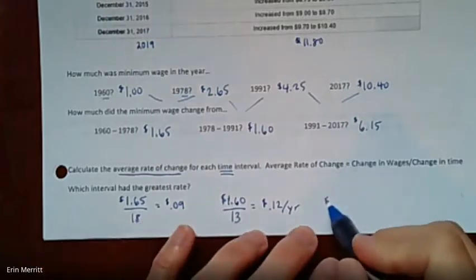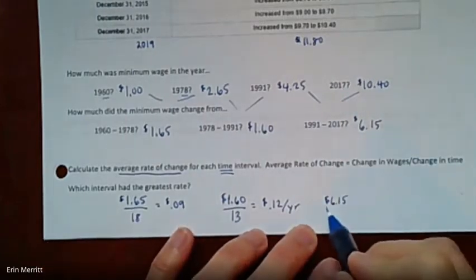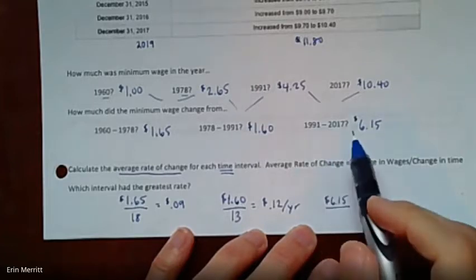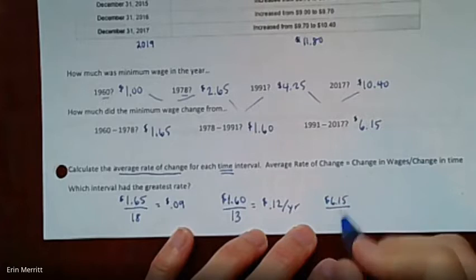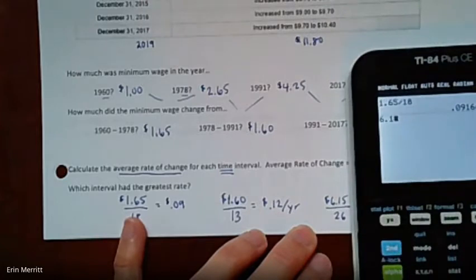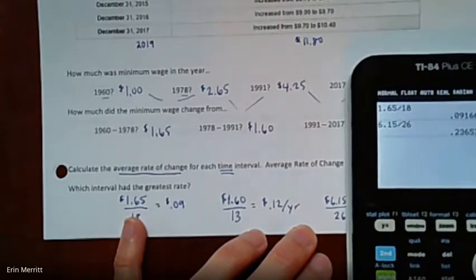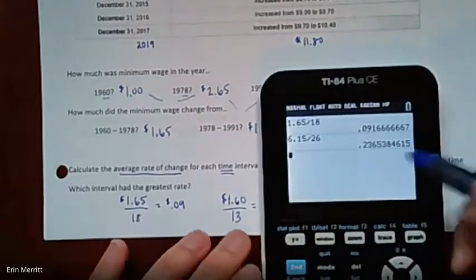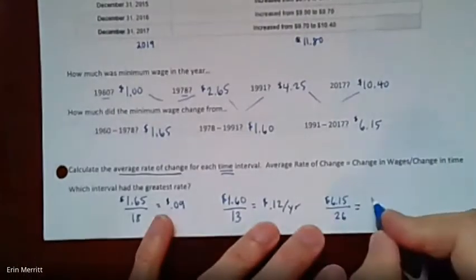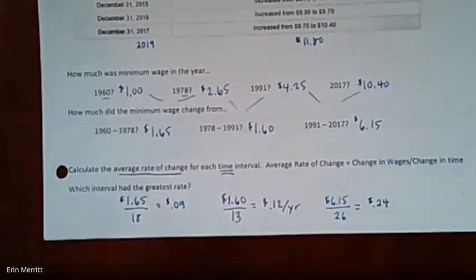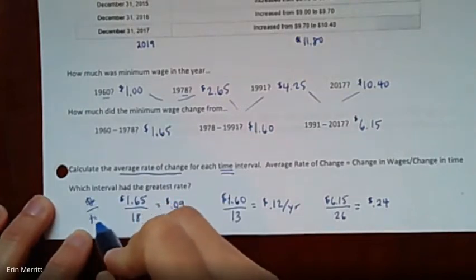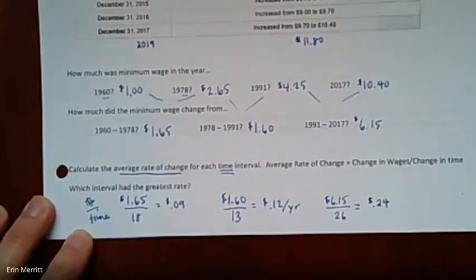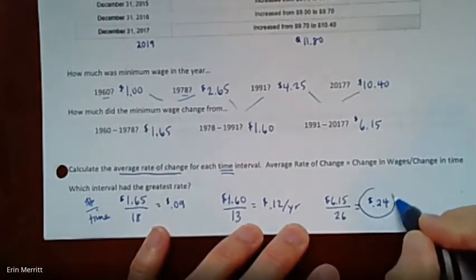All right. And then same thing for the next one. From 1978 to 1991, it went up $1.60, but from '78 to '91, that was a 13 year gap. So it didn't go up quite as much as this, but it went up faster because it was only in 13 years. So if you take $1.60 and divide, it comes out to be about 12 cents per year. So it was a little bit of a faster rate of change. And then the last one, $6.15 increase is definitely the biggest increase here, but over how much time? So '91 to 2017, right? That's 26 years right there. So it's the biggest change, but also the biggest amount of time. But if we take $6.15 and divided by that 26 years, it's still going to be the biggest. The biggest rate, it's about 24 cents a year.